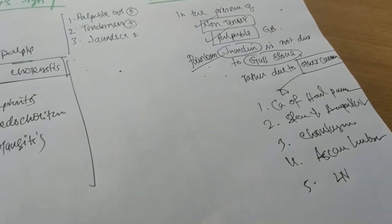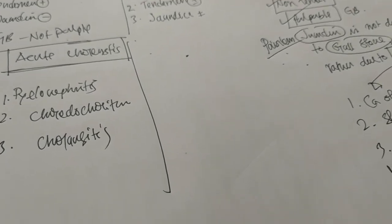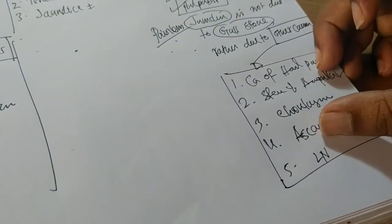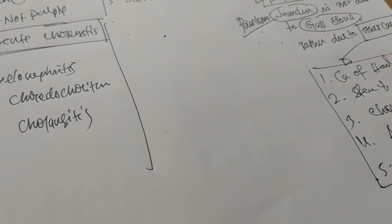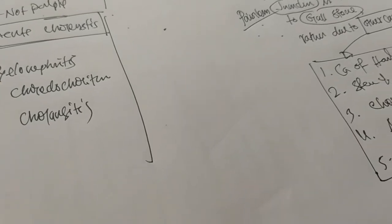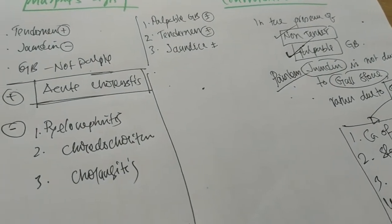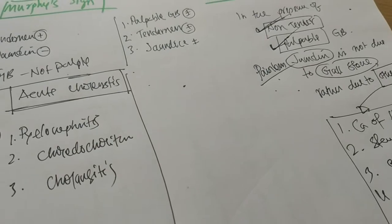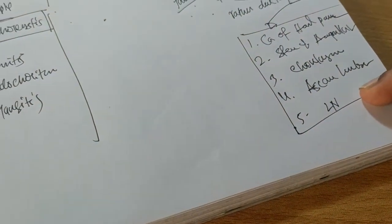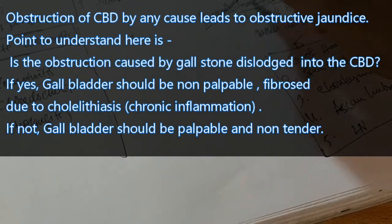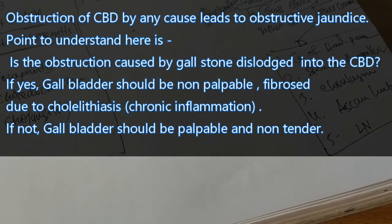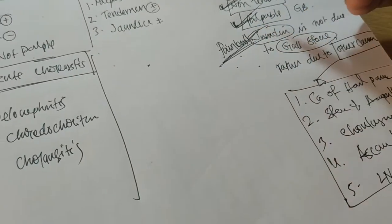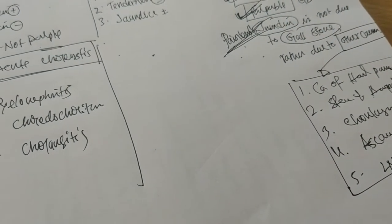These are the causes of positive Courvoisier's Law. When the gallbladder is found palpable, the distal part of the common bile duct is obstructed by some pathology — not due to gallstone. Due to this obstruction, back pressure rises in the common bile duct and the gallbladder becomes distended and palpable. On examination you find a globular mass in the right hypochondriac region. There is no tenderness because the gallbladder itself is not inflamed, and there will be obstructive jaundice due to common bile duct obstruction — this jaundice is not associated with any pain, so it is called painless jaundice.